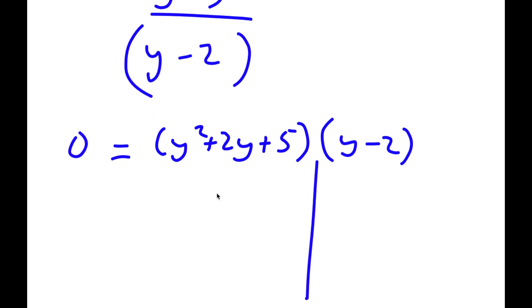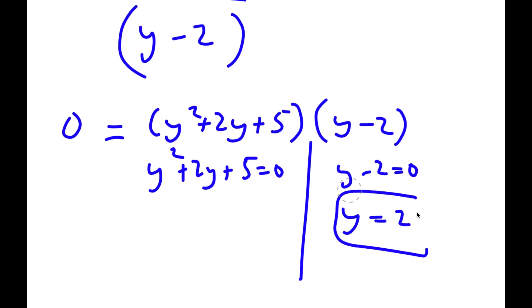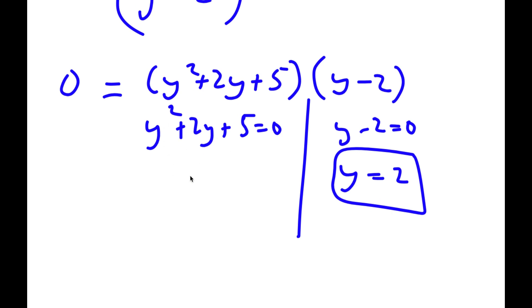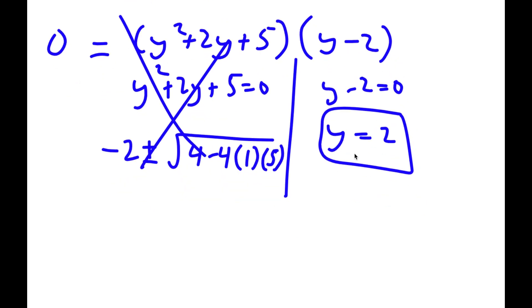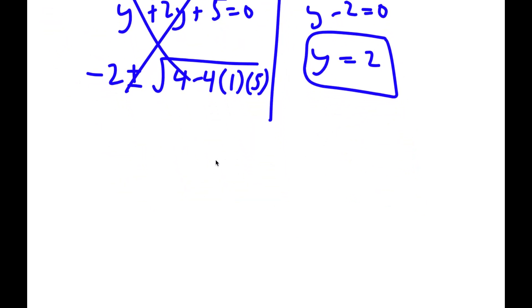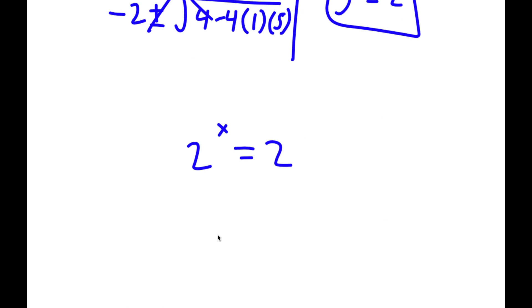This gives me two equations: y squared plus 2y plus 5 equals 0, and y minus 2 equals 0. For y minus 2 equals 0, y is obviously equal to 2. For y squared plus 2y plus 5 equals 0, using the quadratic formula — negative b plus or minus the square root of b squared minus 4ac all over 2a — I get negative 2 plus or minus the square root of 4 minus 4 times 1 times 5, which is the square root of negative 16. We can't take the square root of a negative number, so that doesn't work. My only solution is y equals 2. Since 2 to the power of x equals y, that means 2 to the power of x equals 2, so x equals 1.